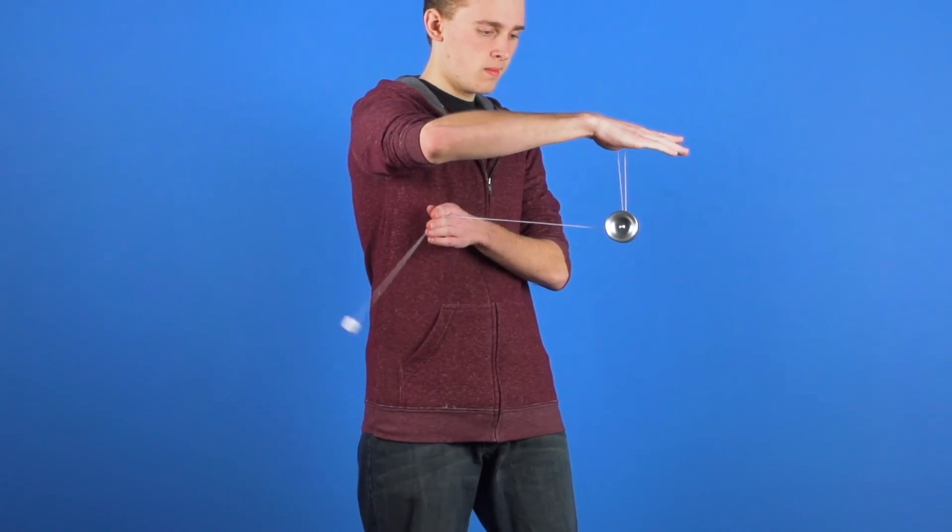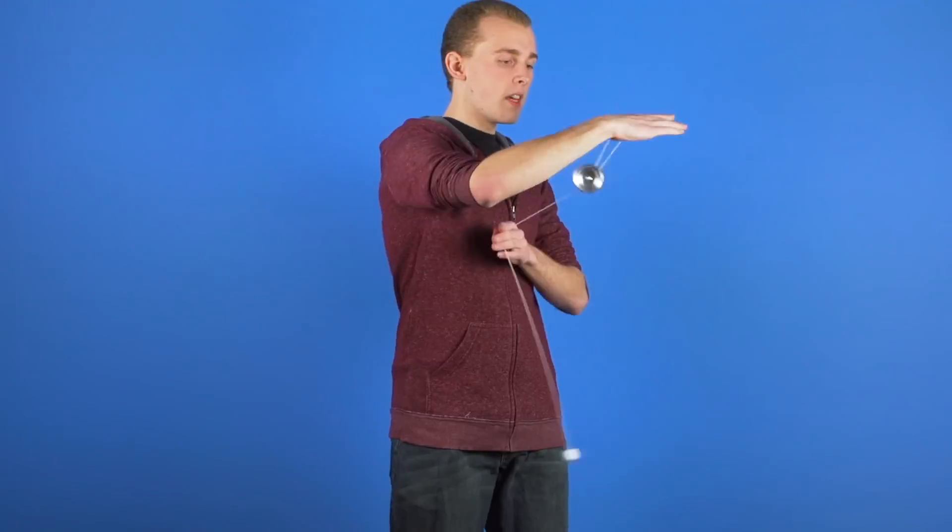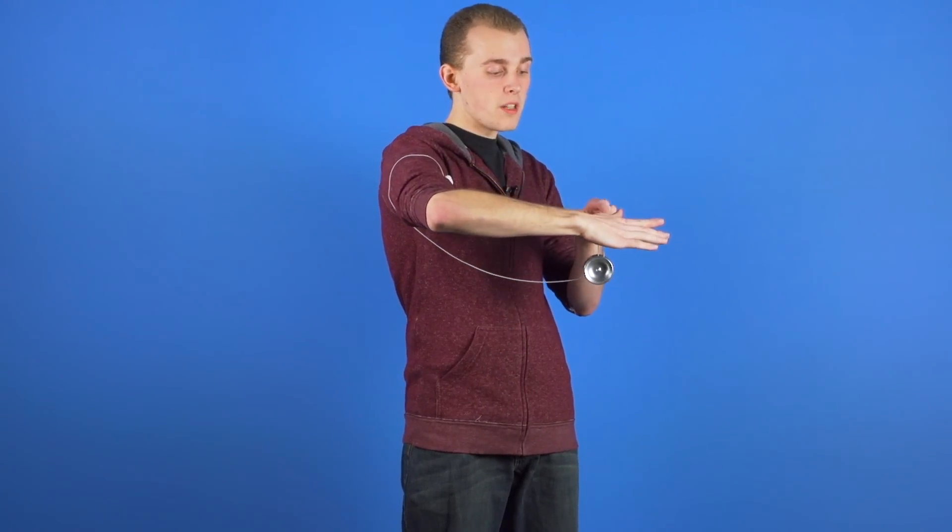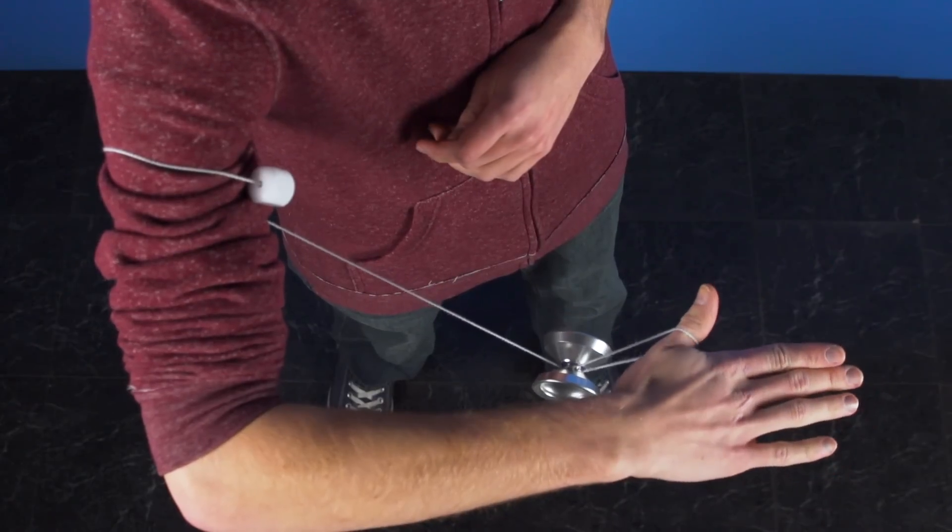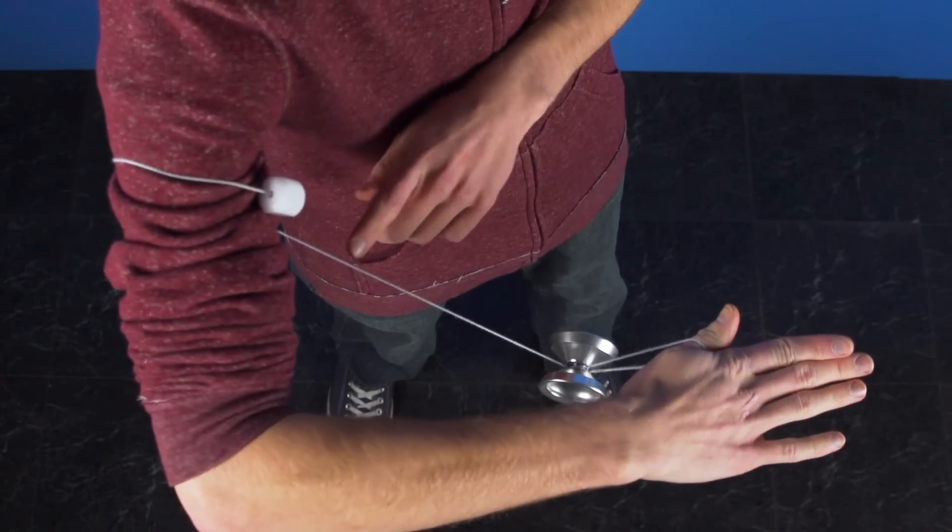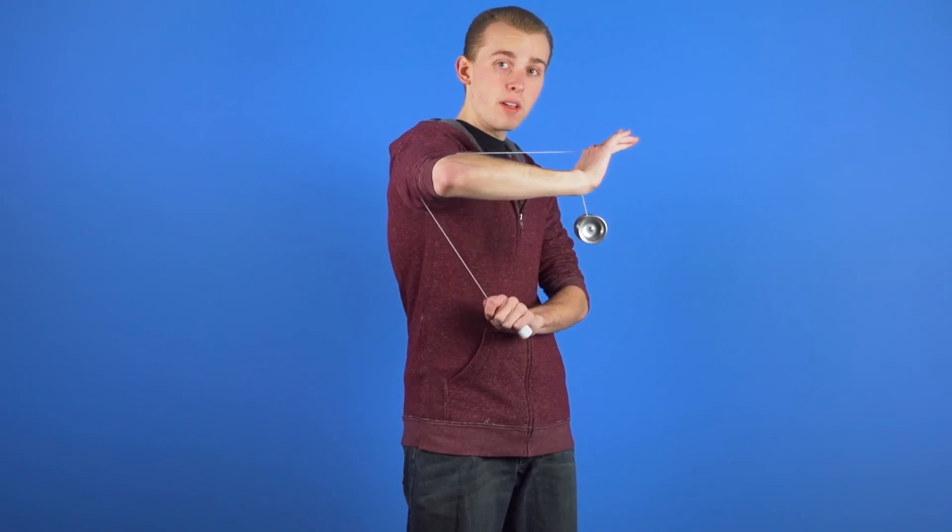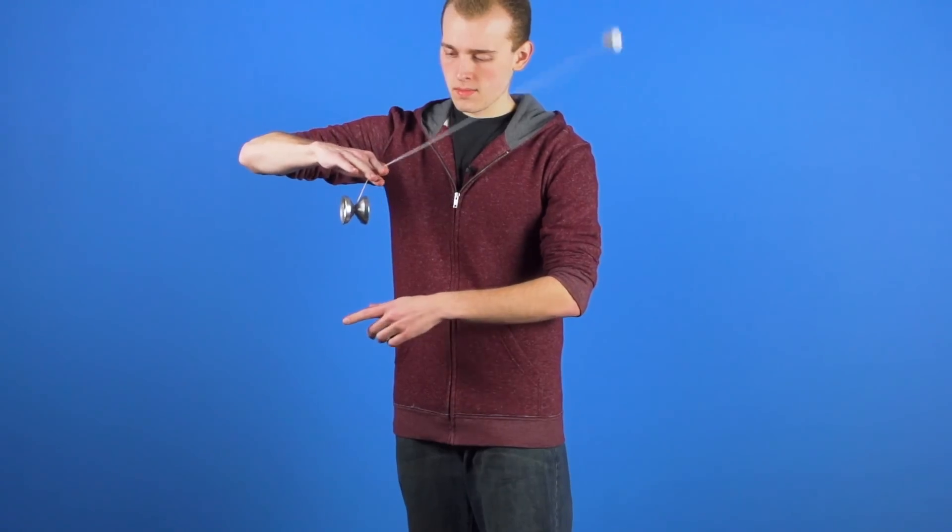From there, what you're going to do is take your opposite hand and push down on this string, and you want to pinch the string in your throw hand between your thumb and your hand. So I'm going to push down. The counterweight is going to come under my arm all the way around, and I can catch the counterweight in my opposite hand.